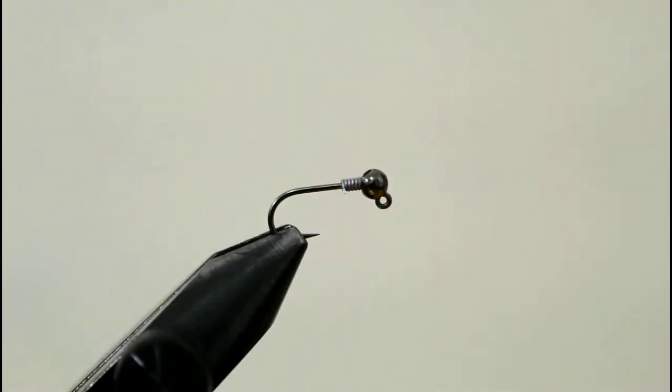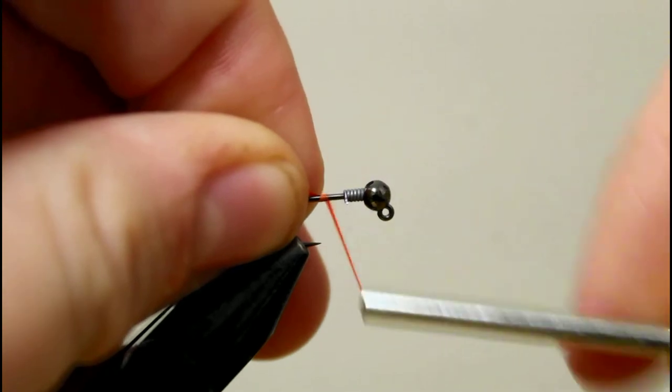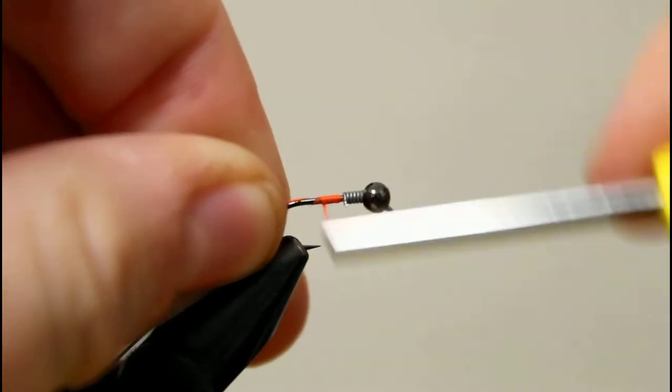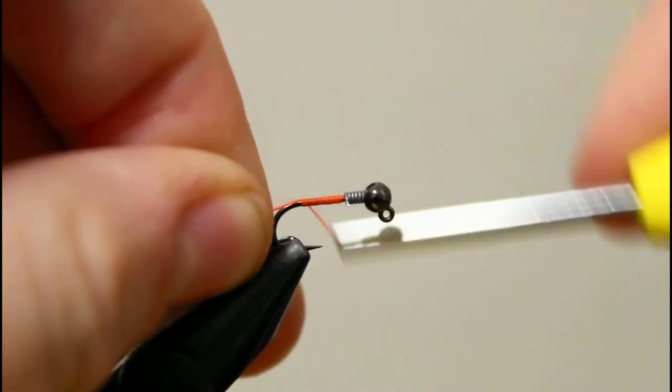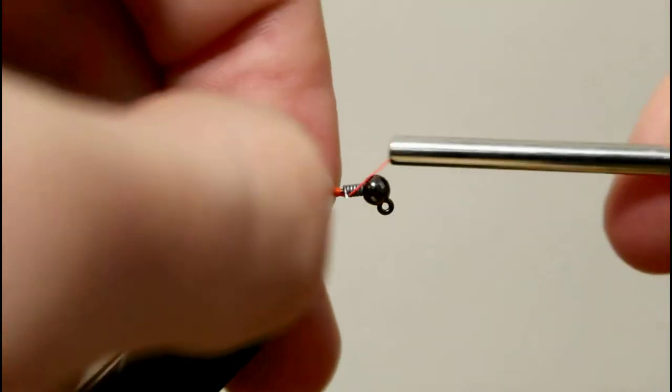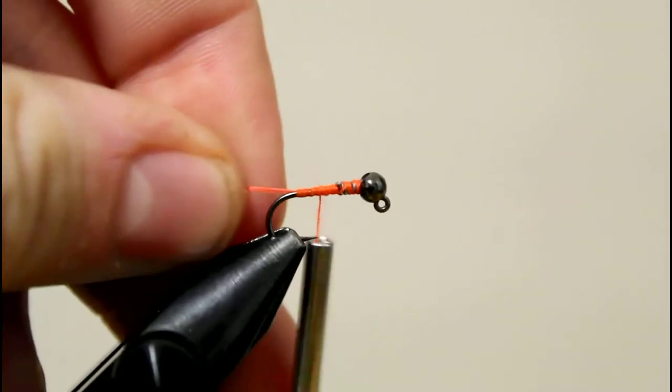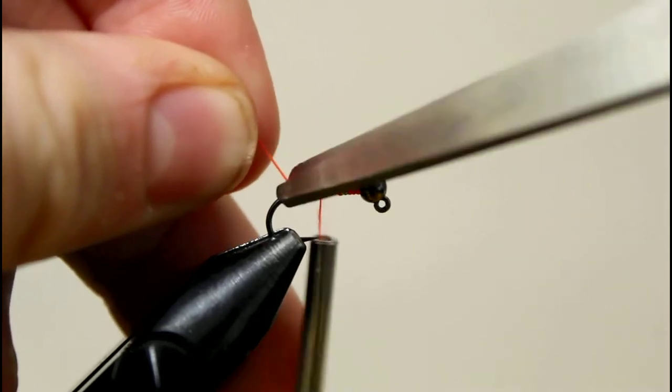Today I'll be using 10 denier orange thread—I believe it's Ultra Thread. Starting right behind the lead and going just to the barb of the hook, going back forward, wrapping over that lead wire to make sure it doesn't go anywhere and starting to create a little bit of a taper behind that lead wire. I'll clip off that excess thread.